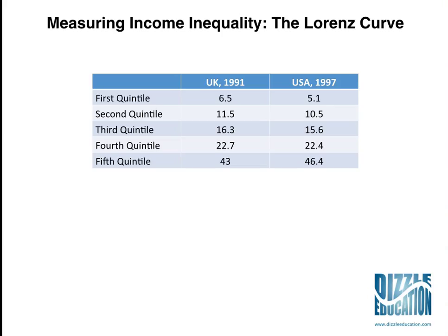We've got some data here for the United Kingdom and the United States. A quintile is 20%, so this data for both countries adds up to 100 in total, covering the whole population. For the UK's data, the poorest 20% of people — the first quintile — have 6.5% of the total income in the UK. The next poorest 20% have 11.5%, and so on. The richest 20% of people in the UK have 43% of the UK's total income.